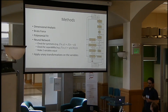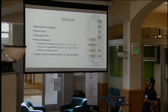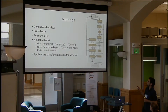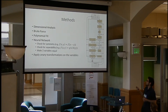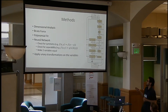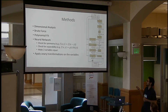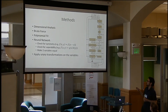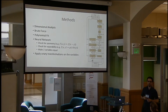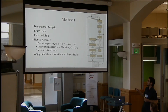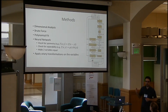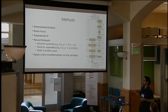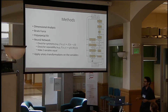If we are not able to find the function that generated the data, we train the neural network and try to search for several properties of the function. If we discover anything — for example, separability — we create two new data sets that are simpler than the original, pass them back into the algorithm, and repeat this process until we either find the equation or run out of methods to try.